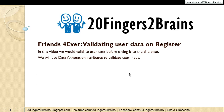Hello friends, in this video we are going to implement validation for register functionality. In the previous video we had implemented register functionality where we saved the user data into the database. In this video we would basically validate user data before saving it to the database so that we save good data. We will use data annotation attributes to validate the user input.